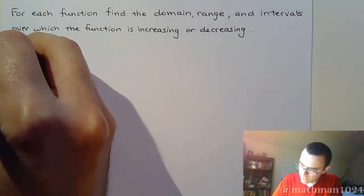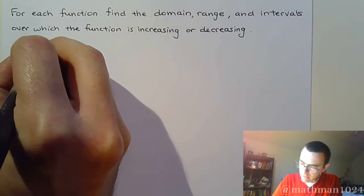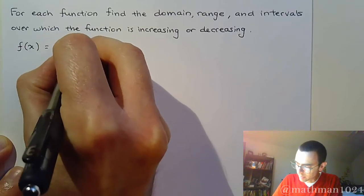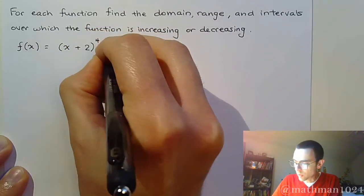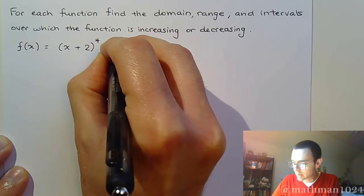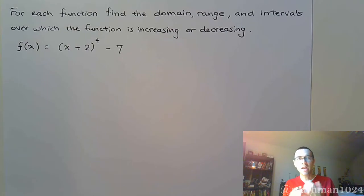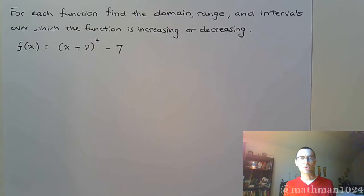Let's start with the first example that we have in the notes. F of x is equal to x plus 2 to the 4th minus 7. I don't care what the actual graph is — I just want to get a sketch of it, get an idea of it, and then I can answer all these questions.